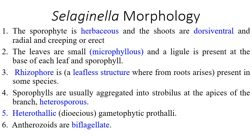We will begin with the morphology of Selaginella. The plant body is sporophytic and herbaceous in nature. The shoots are dorsiventral and radial, and the nature is creeping or sometimes erect. This creeping and erect nature varies from species to species. The leaves are small, described as microphyllous.